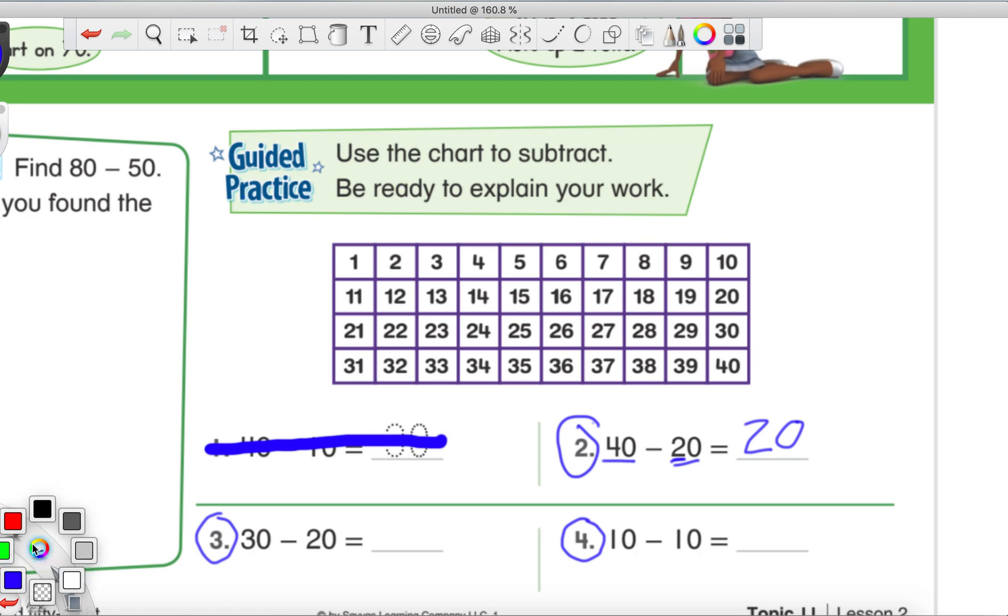All right. So for this, I'm going to use two different colors. So remember, the first number is our starting point. So that's the first number we find on our hundred chart. So we find 30 first. And then the second number can tell us how many jumps. By looking at the tens place, there's a two. So it's telling us two jumps. One, two. And we land on 10. So 30 minus 20 is 10.